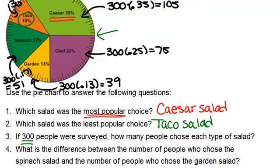All right, the last question is, what is the difference between the number of people who chose the spinach salad and the number of people who chose the garden salad? So this question is about numbers of people as opposed to percentages.